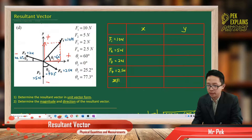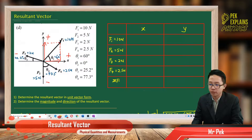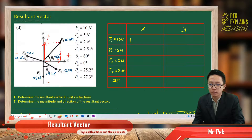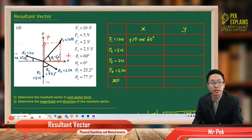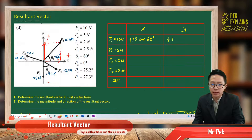For F1, the X component has angle theta, so we use cos theta: 10 cos 60. It is going to the right, so it's positive — 10 cos 60. For the Y component, it is going up, so it is positive. No angle with the Y-axis, so we use sin theta: positive 10 sin 60.